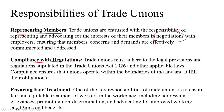When it comes to compliance with regulations, trade unions must adhere to the legal provisions stipulated in the Trade Unions Act 1926 and all other applicable laws. Compliance ensures that unions operate within the boundaries of the law and fulfill their obligations. Registered unions must adhere to provisions ranging from maintaining proper financial records to filing annual returns and conducting elections as per the act's guidelines. Unions must also follow due process outlined in the Industrial Disputes Act 1947 when resorting to strikes or other forms of industrial action.